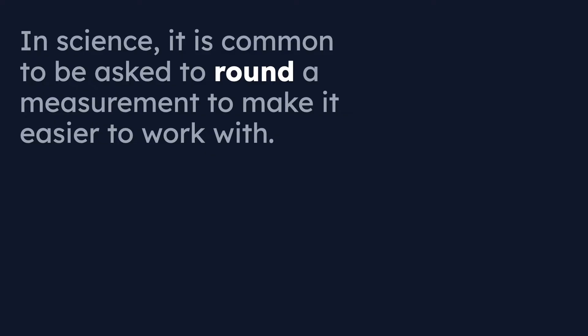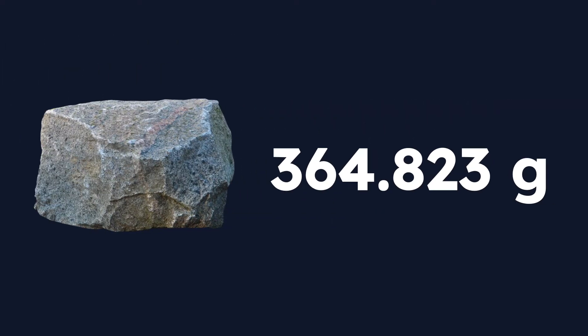Let's do a quick review and recap of what the basics of rounding might look like. We'll start by rounding some examples involving the mass of this rock. Imagine we took this rock and put it on a triple beam balance or on a digital scale and came up with a mass of 364.823 grams. That's a fairly detailed and complex number — it might be tricky to look for patterns, it might get confusing and hard to communicate, so we're going to go through a process of rounding it down to a simpler number.